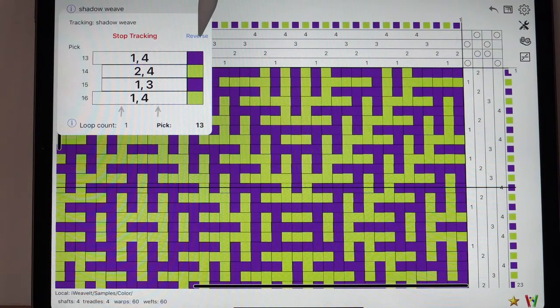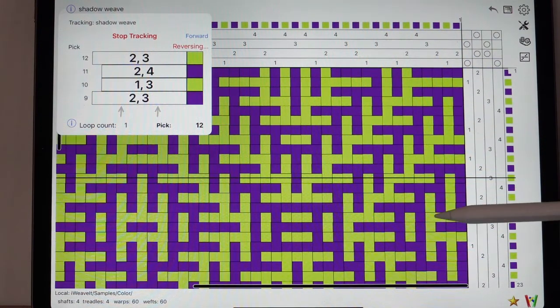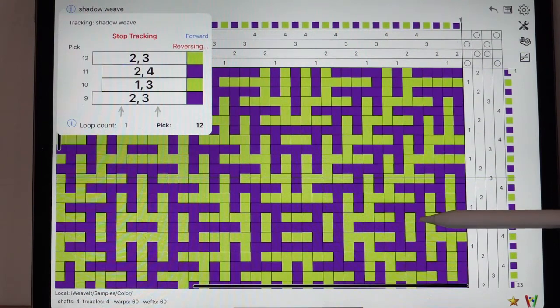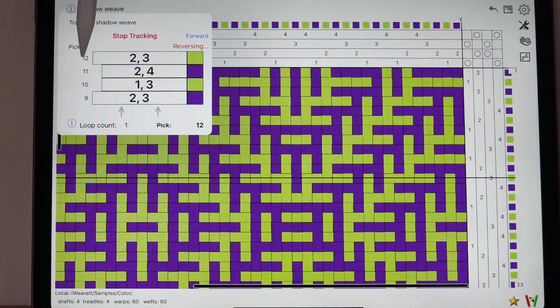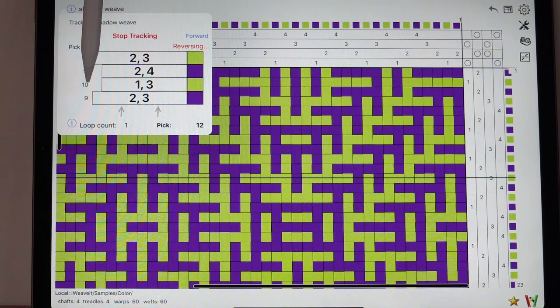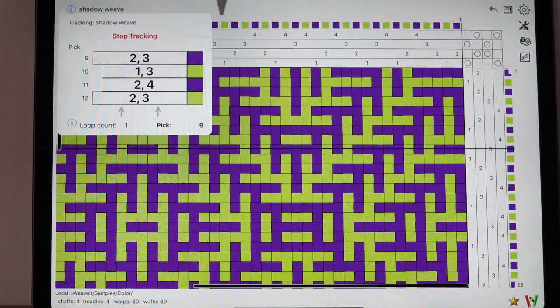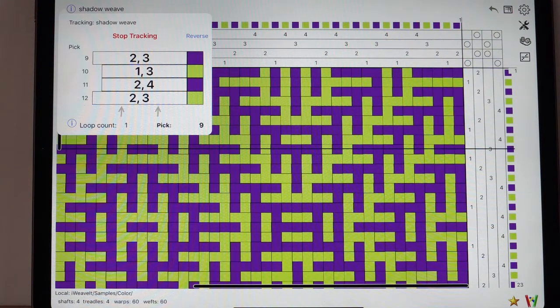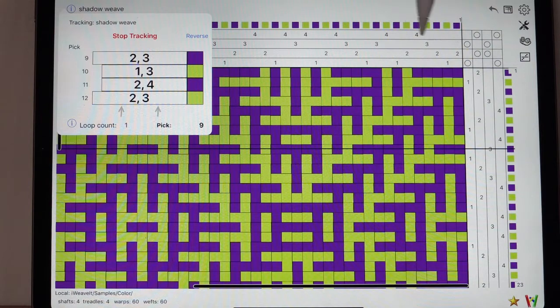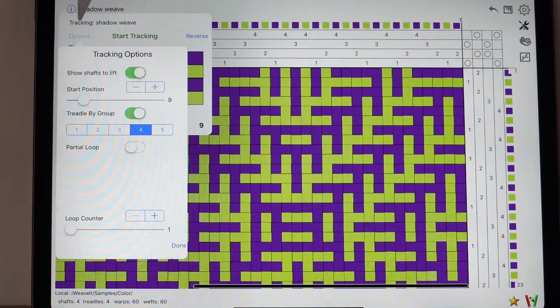So it makes the weaving a little faster when you use groups. You can reverse here. You unweave and it goes the other direction. So now it's going 12, 11, 10, 9. And it works back to where you were. If I go forward, it's 9, 10, 11, and 12 again. If I go back over and stop tracking, and I go back to my options, the last thing I want to show you is doing a partial loop.